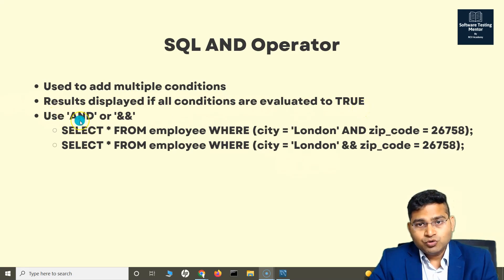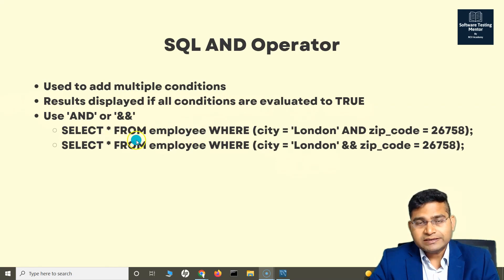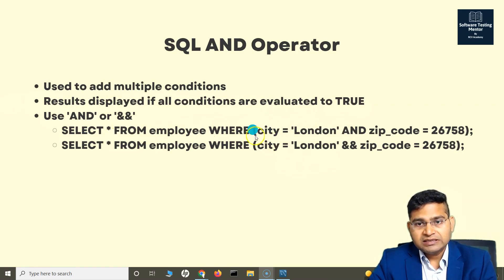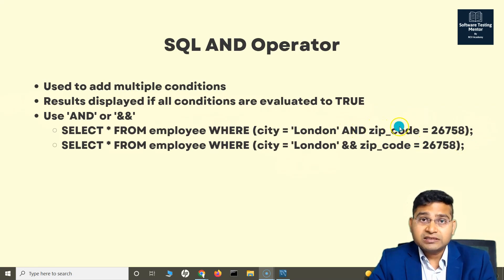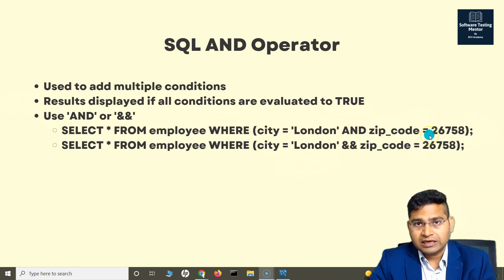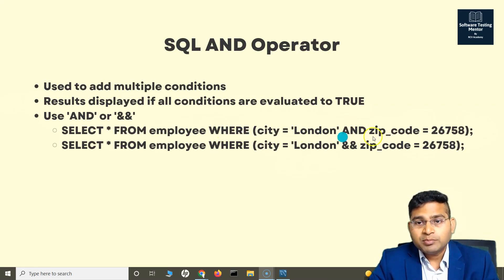To use the AND operator, you can use either the keyword AND or the double ampersand (&&). For example: SELECT * FROM employees WHERE city is one of the conditions. So I am looking for rows where the city is London, and with the AND operator I can also specify another condition — for example, that the zip code matches what I'm looking for. This is how the AND operator is helpful, and you can use multiple AND conditions to evaluate multiple criteria.